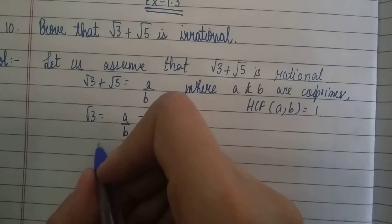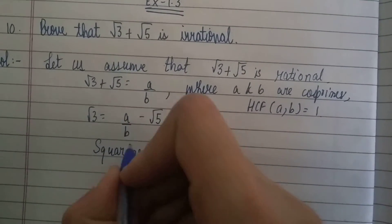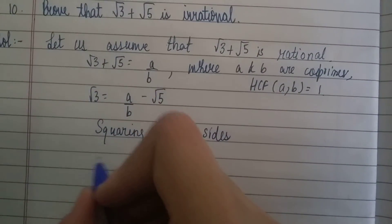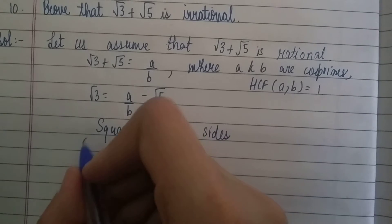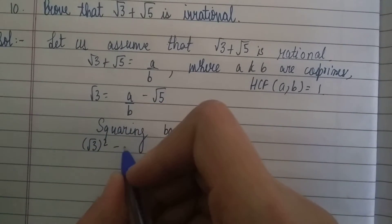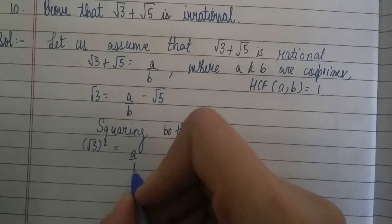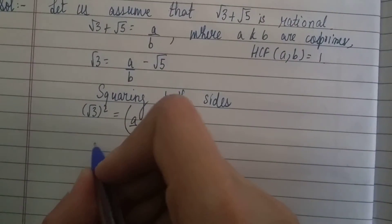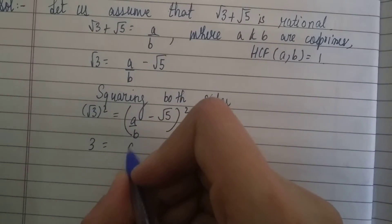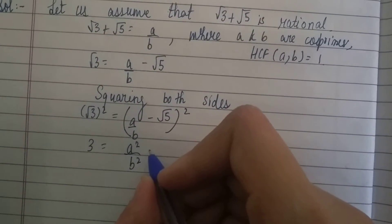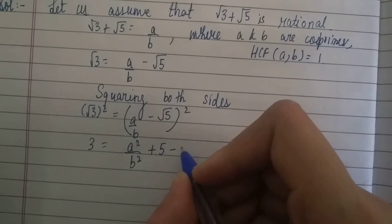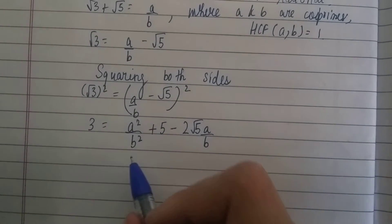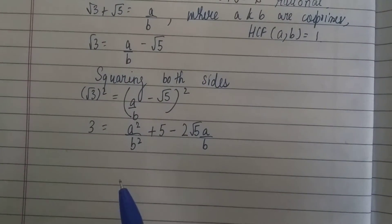Next, we will do squaring on both sides. So (√3)² = (a/b − √5)². The left side gives 3, and the right side expands to a²/b² + 5 − 2√5 · (a/b).